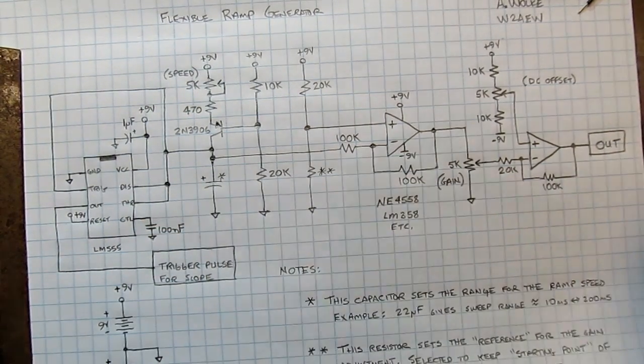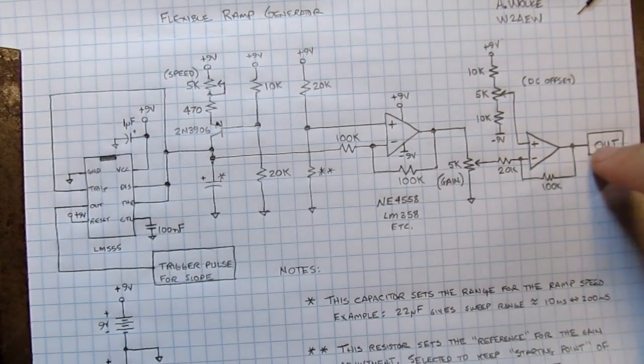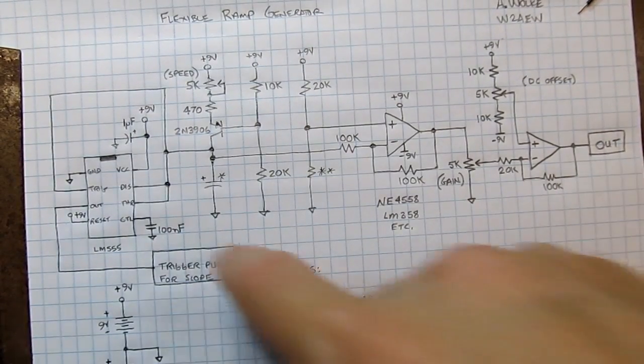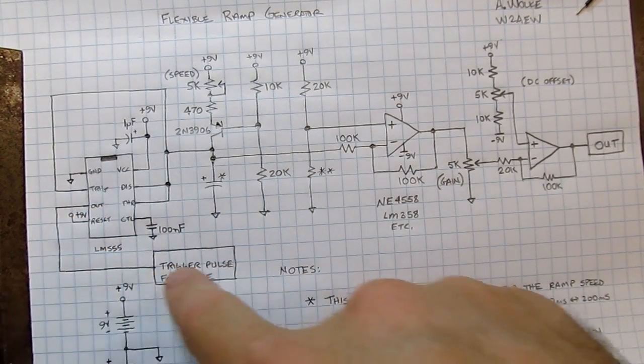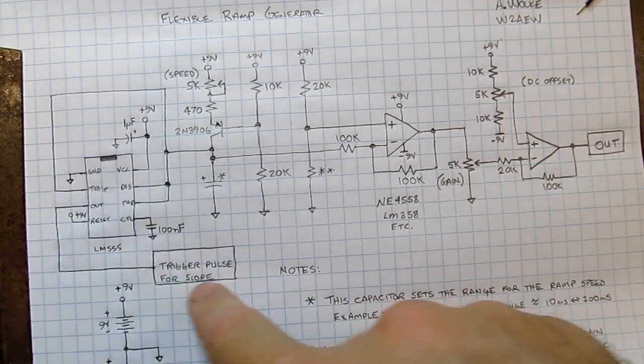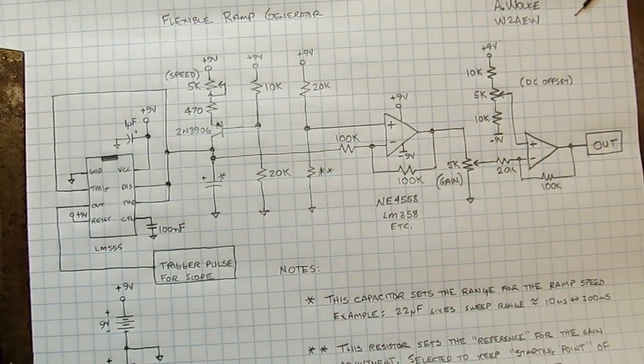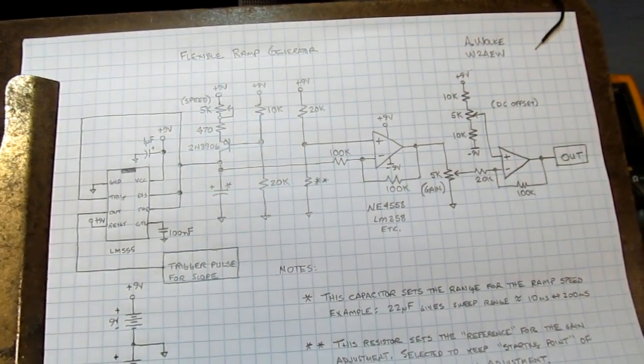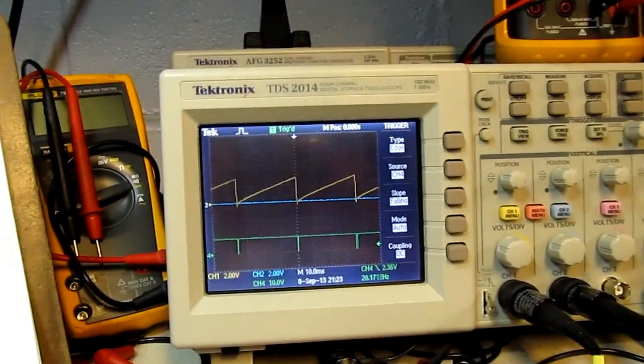So that's the whole circuit. It's actually pretty simple. You get the adjustable ramp out of here, but then the output of the 555 timer can also be used as a trigger pulse for the scope. And that's what I've got shown on the scope over here as well. That's the green trace down at the bottom.